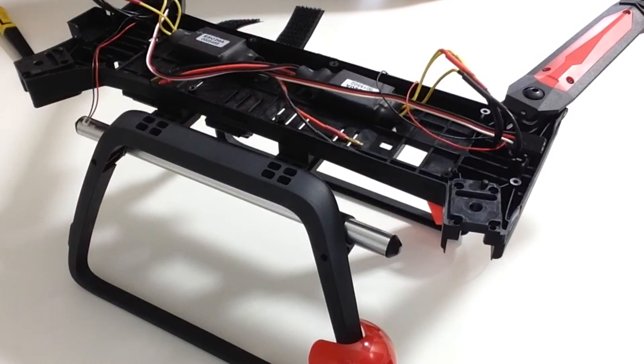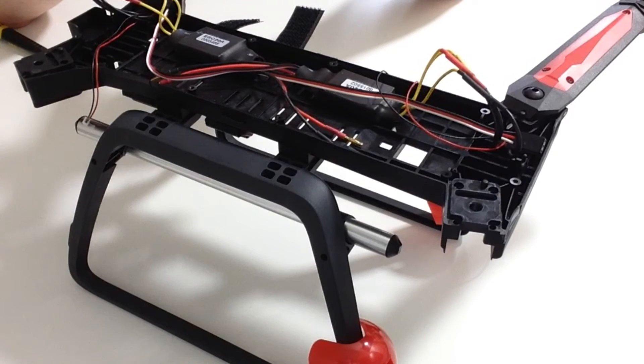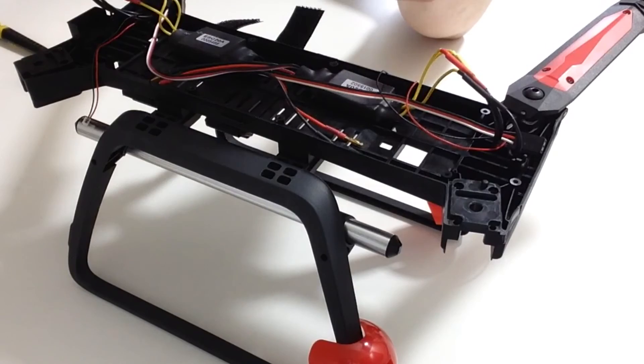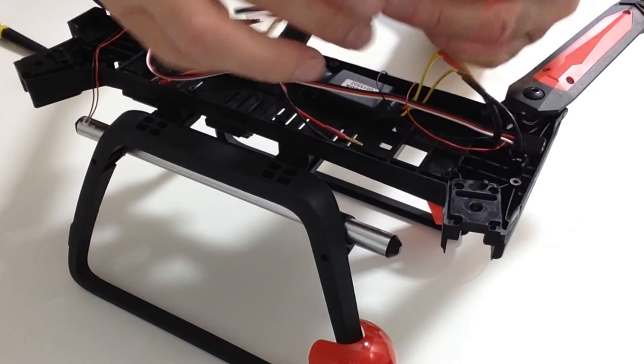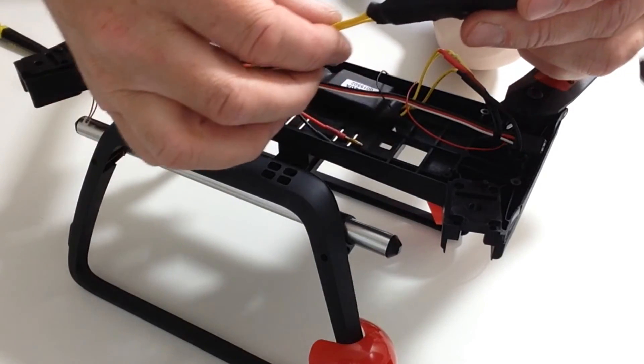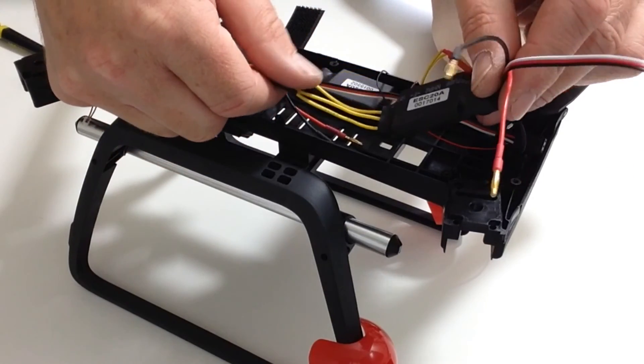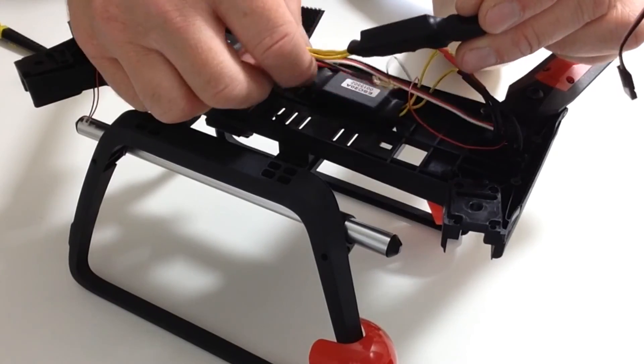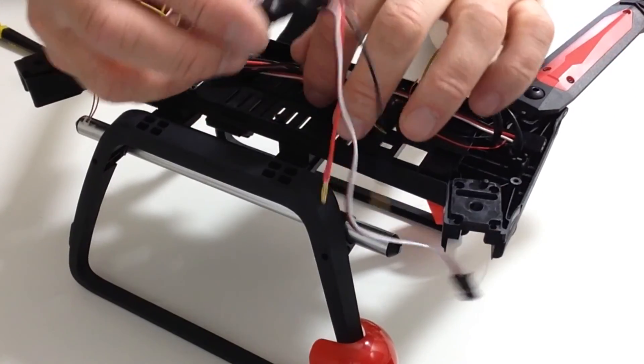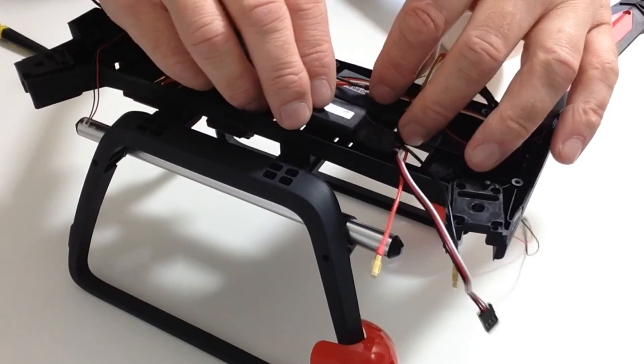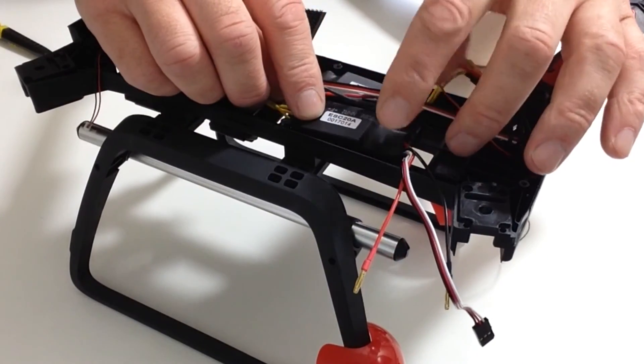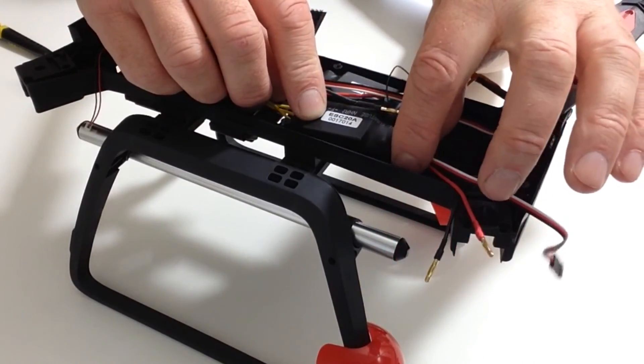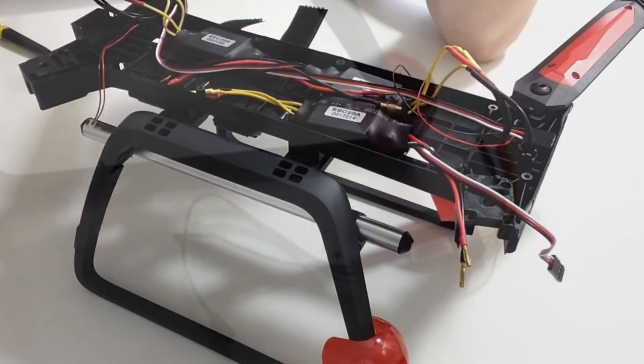In stage 31, we're going to be securing the third ESC which is the electronic speed controller to the chassis. So notice how the wiring goes, making sure that the three yellow cables are facing towards the centre of the drone chassis. And then with some double-sided tape, do as we've done before, fit in the electronic speed controller into position like so.